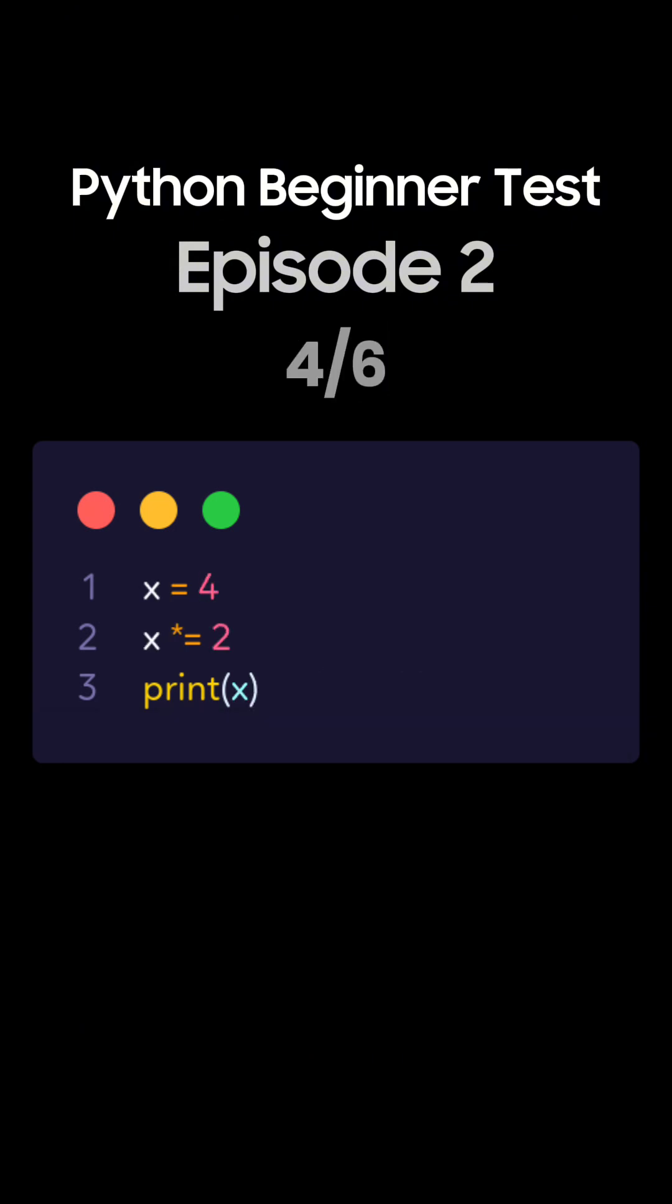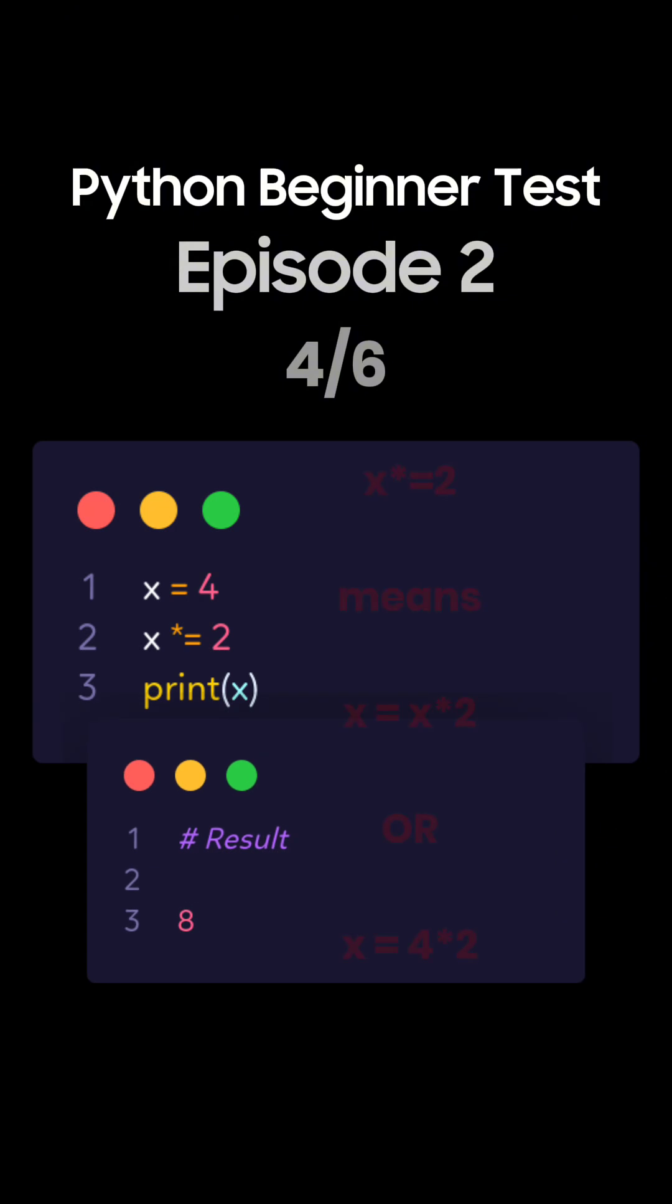Question 4. What's the output of this Python code using assignment operators? This is the correct answer. The operation x multiplied by 2 is assigned back to x, resulting in 8.